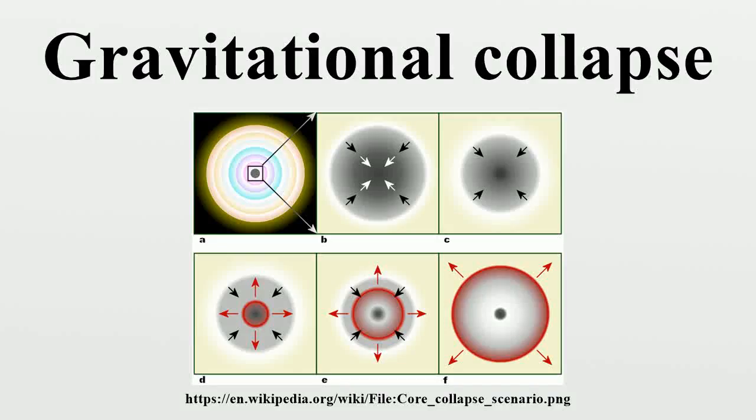Gravitational collapse is the condensing of an astronomical object due to the influence of its own gravity, which tends to draw matter inward toward the center of mass. Gravitational collapse is a fundamental mechanism for structural formation in the universe.